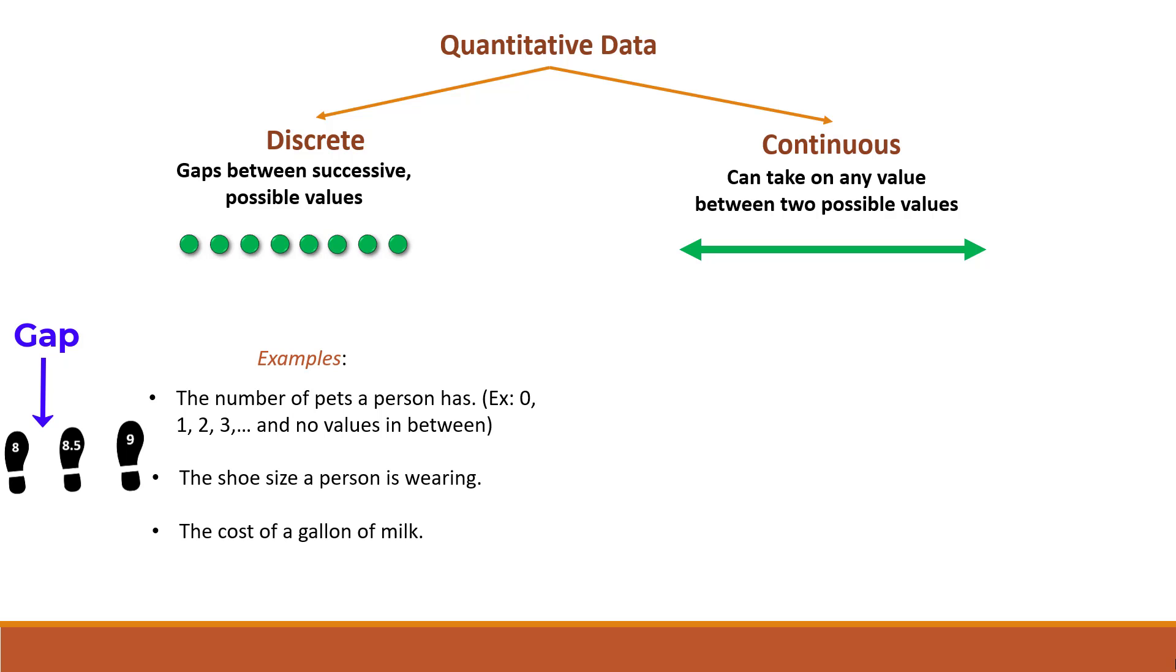And the last example of discrete quantitative data is the cost of a gallon of milk. Now, I want to recommend when you're trying to determine whether you're looking at discrete or continuous quantitative data, just give yourself examples. So when I think about possible values for the cost of a gallon of milk, I can give myself an example, let's say $3.50. What would be the next possible value? Well, it has to be $3.51 and there is no possible value between those two. And therefore, the cost of a gallon of milk represents discrete quantitative data.